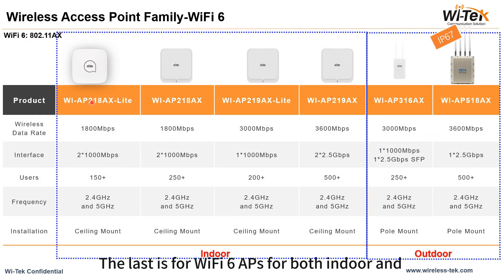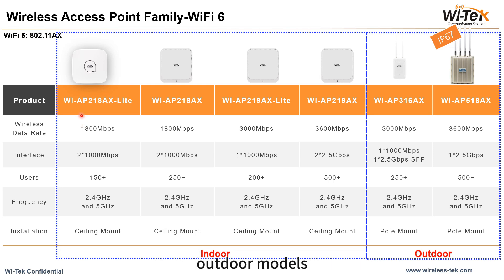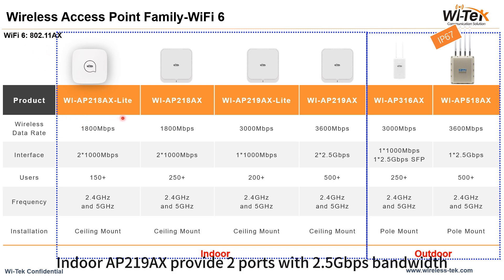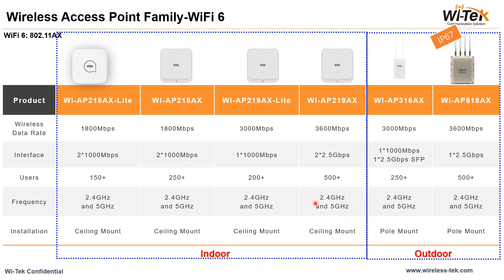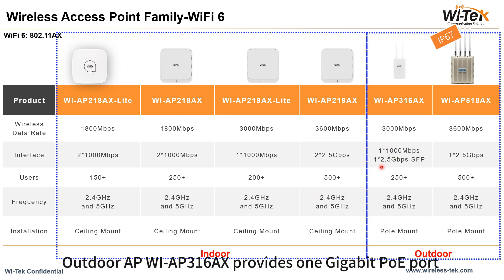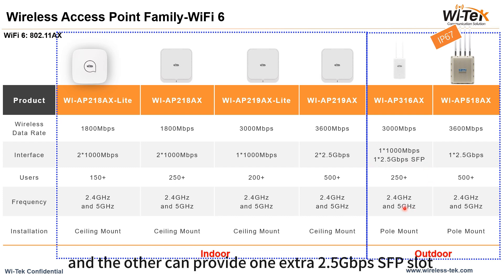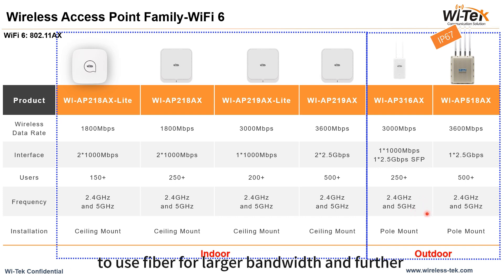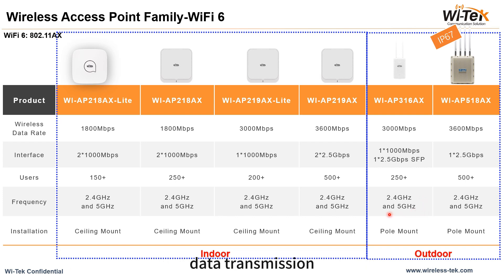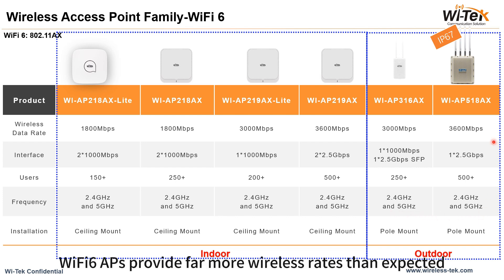The last category is Wi-Fi 6 APs for both indoor and outdoor models. Indoor AP 219 AX provides two ports with 2.5 Gbps bandwidth. Outdoor AP WI-AP 316 AX provides one gigabit PoE port and an extra 2.5 Gbps SFP slot to use fiber for larger bandwidth and further data transmission. Compared with Wi-Fi 5 APs, Wi-Fi 6 APs provide far higher wireless rates.